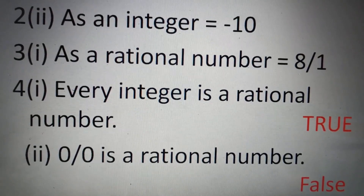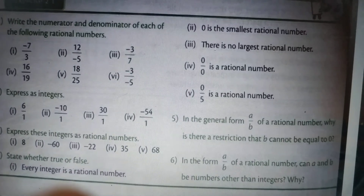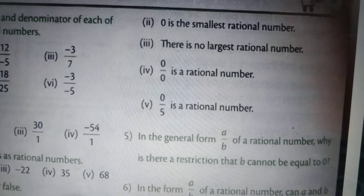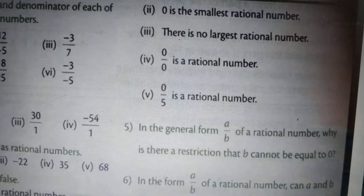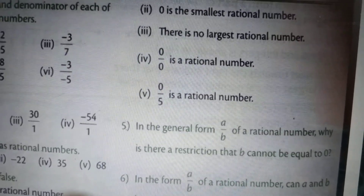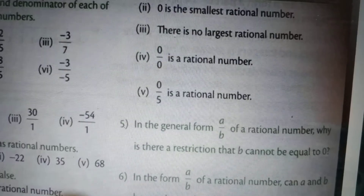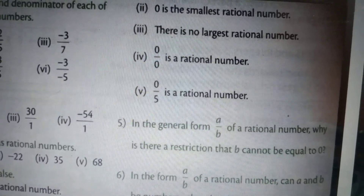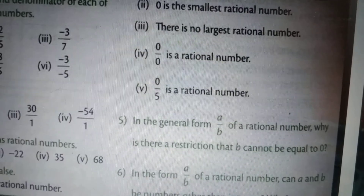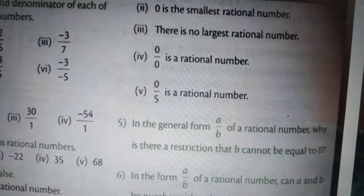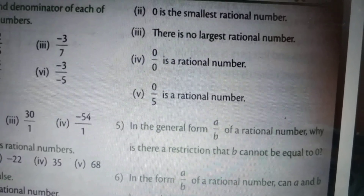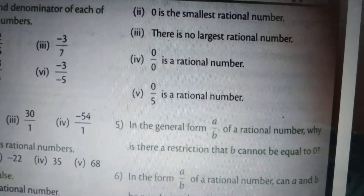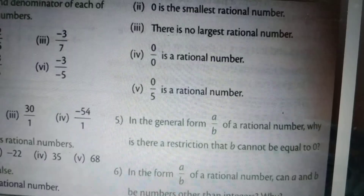Question 4, fourth part: '0/0 is a rational number.' A number can be called rational only when expressed in p/q form where q is not equal to 0. In this question, the denominator contains 0. So this is not a rational number. The answer is false.